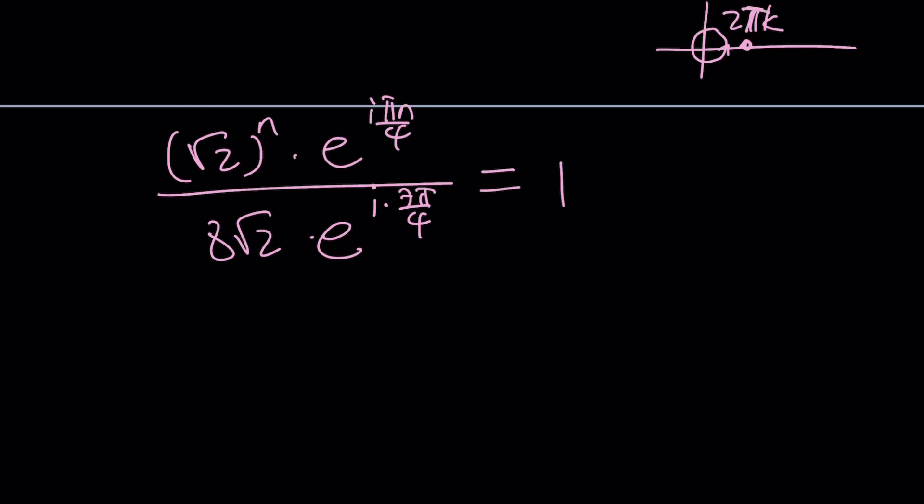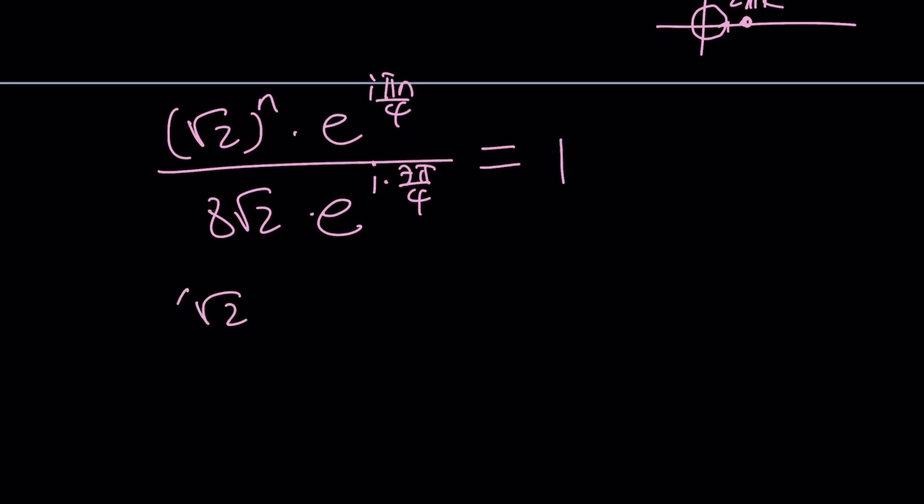But let's go ahead and simplify this a little bit first. (√2)^n divided by 8√2 times e to the power... Now I can go ahead and take out actually an iπ/4 here, and that's going to give me n-7. Notice that the exponents are subtracted because this is division.